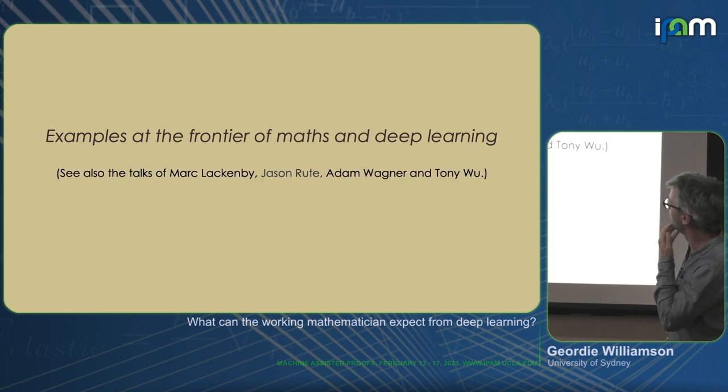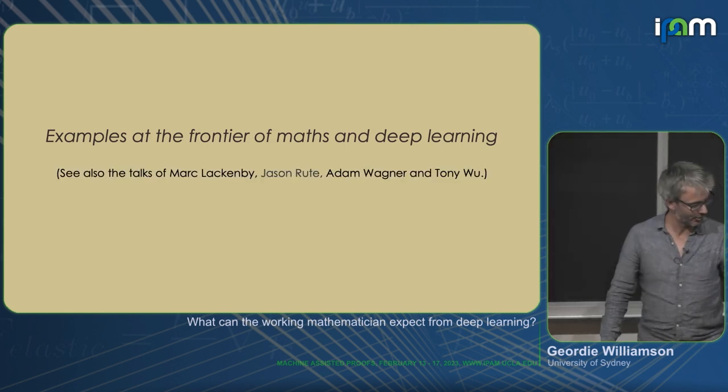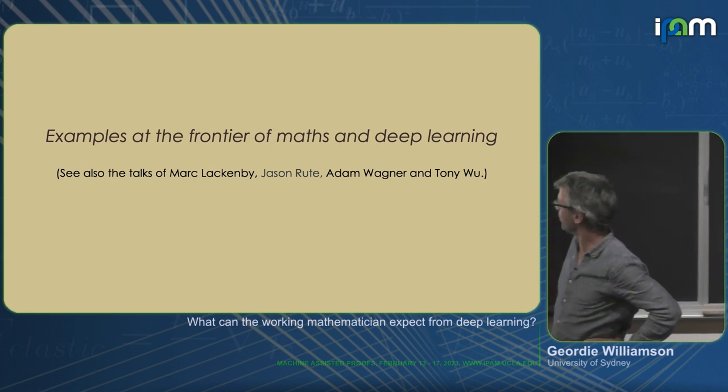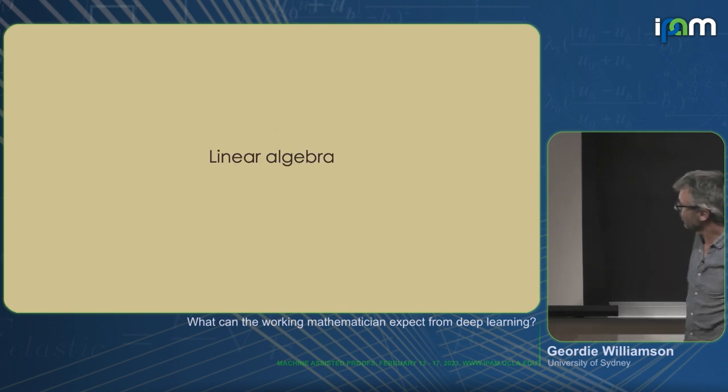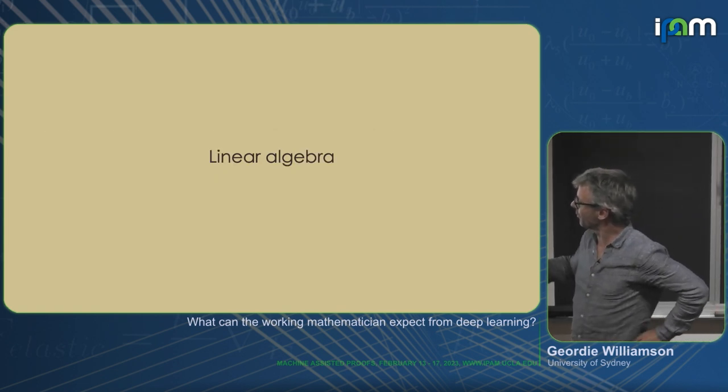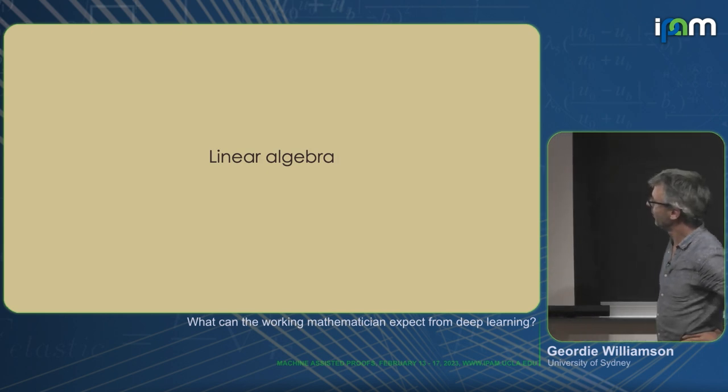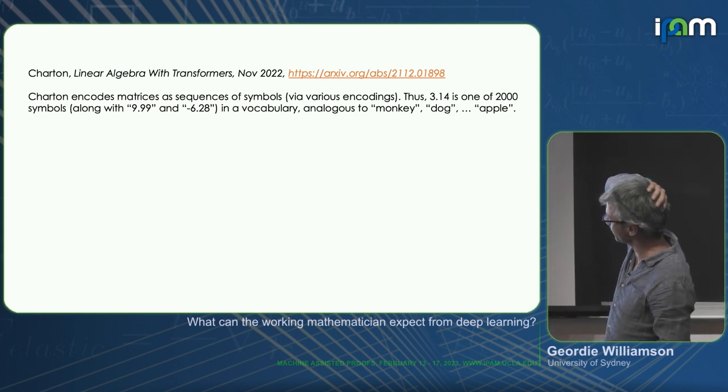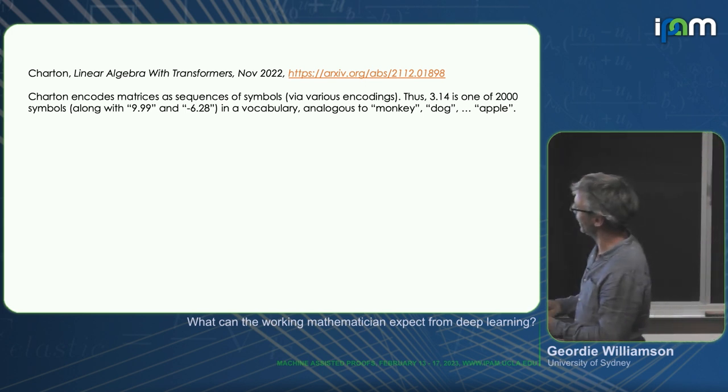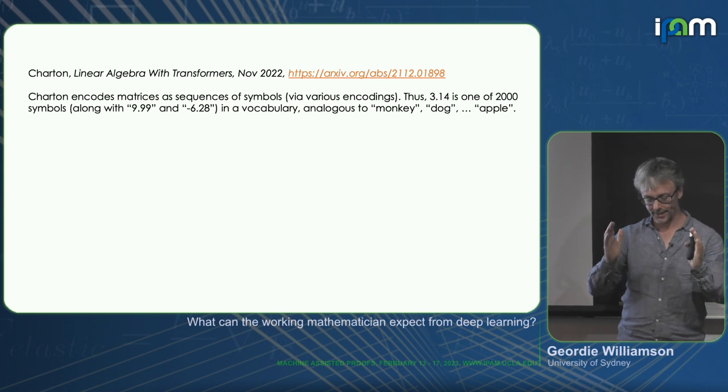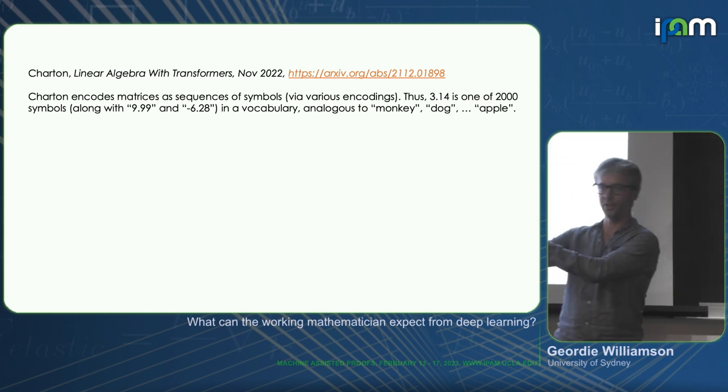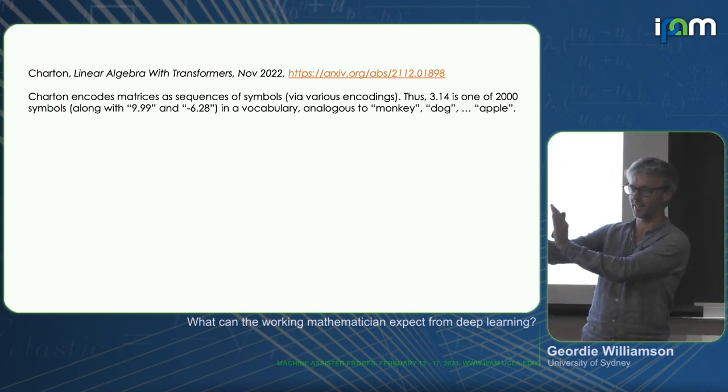So I want to go over a really interesting example. I'll discuss this work of Charton on transformers and matrix inversion. So this is a problem that, from a mathematical point of view, seems very trivial. This paper of François Charton, linear algebra with transformers from November last year. So basically, what he says is, I want to see if a transformer can learn basic operations. If you think about taking a matrix and inverting it, you can think about this as a very perverse translation task.